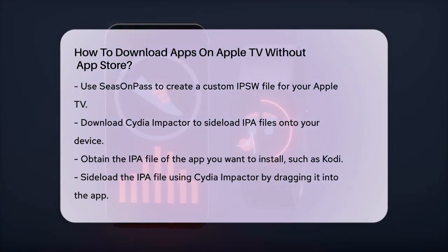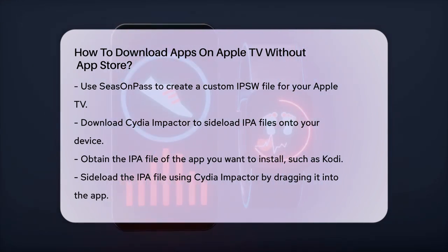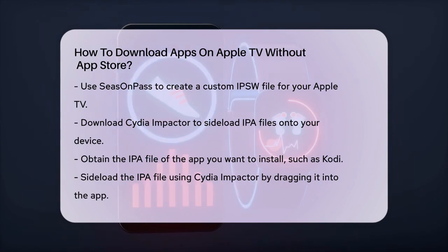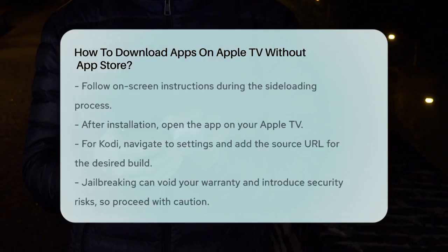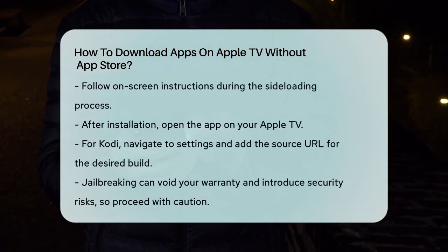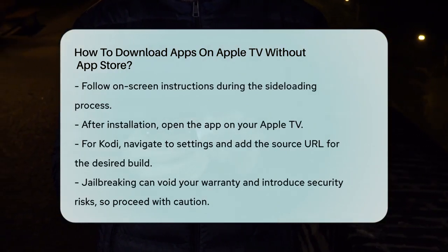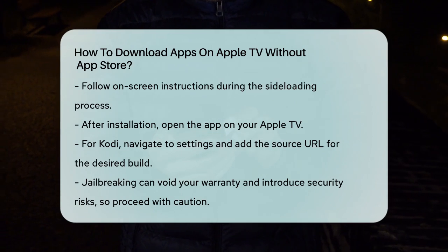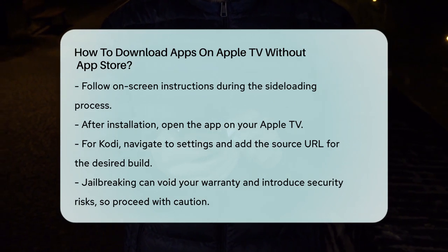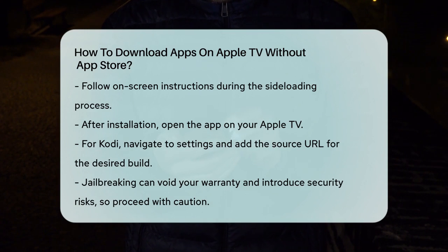After the installation is complete, you can open the app on your Apple TV. For example, if you're installing Kodi, you'll open the Kodi app, navigate to the settings, and add the source URL of the build you want to install. Then follow the on-screen instructions to complete the installation.